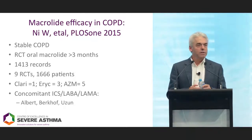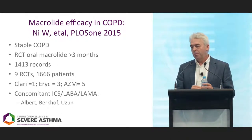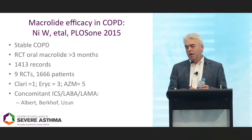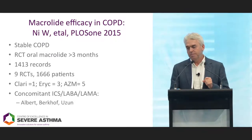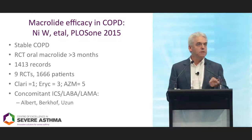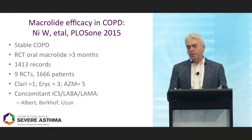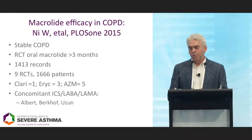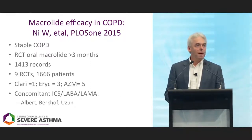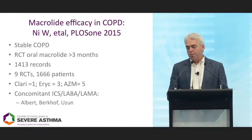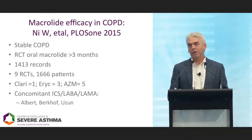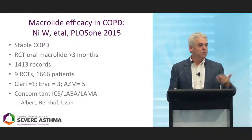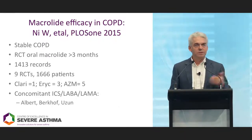To answer the question of efficacy of macrolides in COPD, there's a nice systematic review published in PLOS One in 2015. They looked at patients receiving any oral macrolide for greater than three months and found nine RCTs of about 1,600 patients — one study with clarithromycin, three with erythromycin, and five with azithromycin. An important consideration in all these studies is background therapy — whether patients were receiving optimal airway disease treatment. In three studies, a reasonable proportion were getting ICS, LABA, and LAMAs.